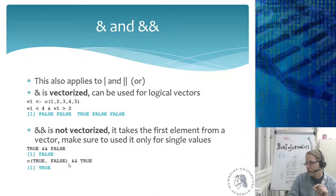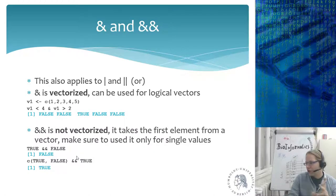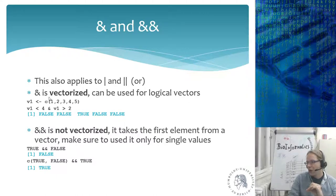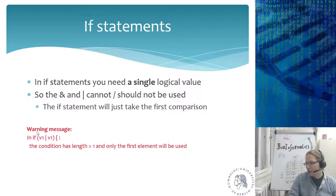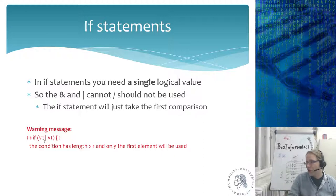Using the non-vectorized version on a vector throws a warning: 'condition has length greater than one, only the first element will be used.' When you see this warning inside an if statement, the if statement is wrong — you're using the vectorized version where you should use the non-vectorized one, and you need to ensure the condition reduces to a single logical value.